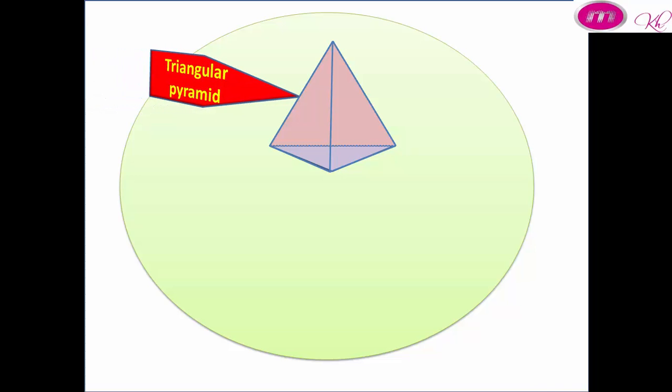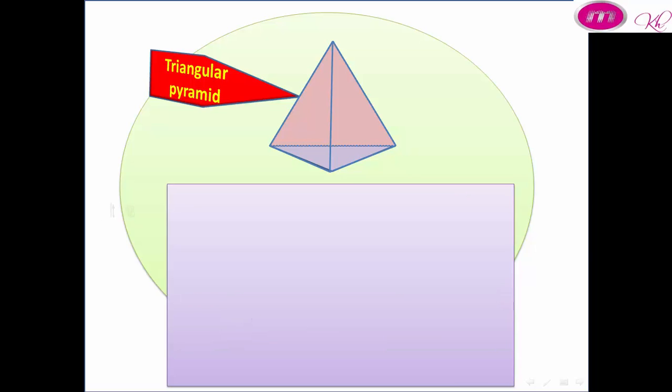Triangular pyramid. A pyramid has 4 vertices, 6 edges, 3 faces, and 1 base.